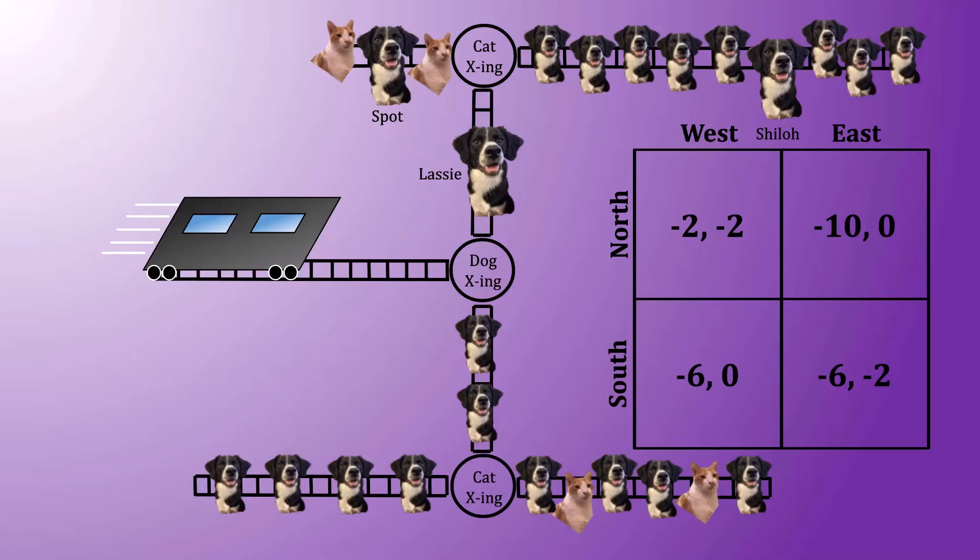In other words, the way the cat randomizes between west and east is designed to make it so that the dog expects an equal number of dogs hit if he goes north, as he would expect if he instead went south.